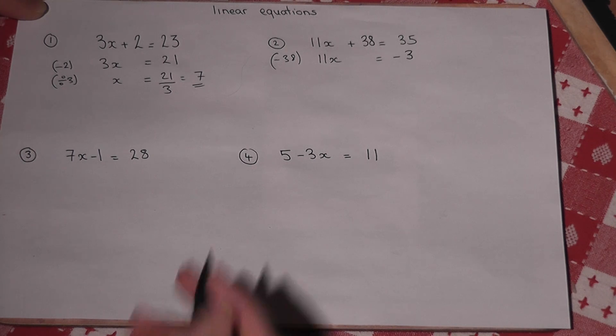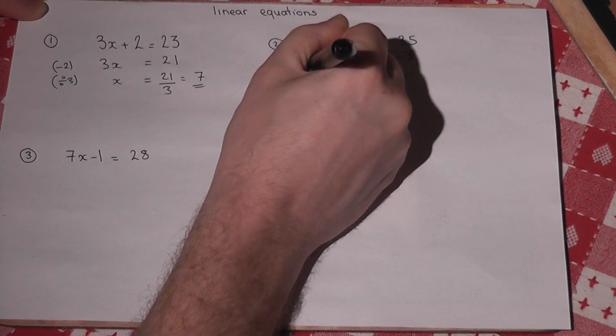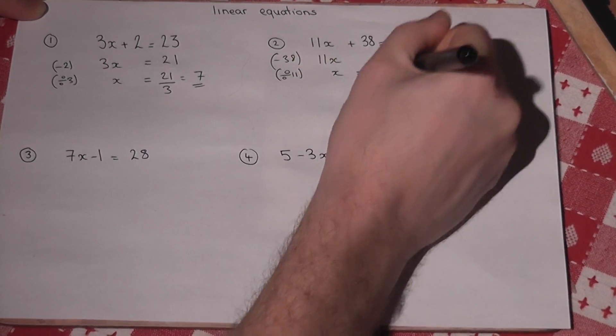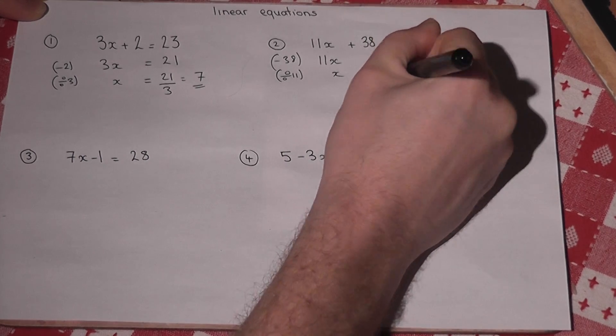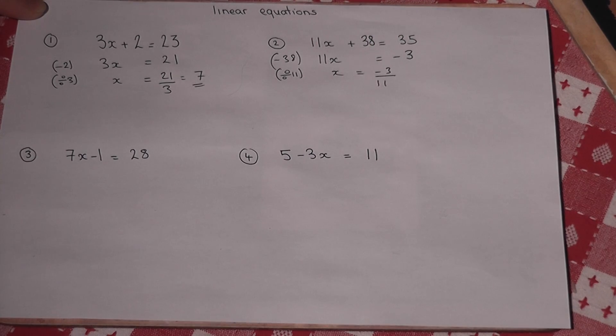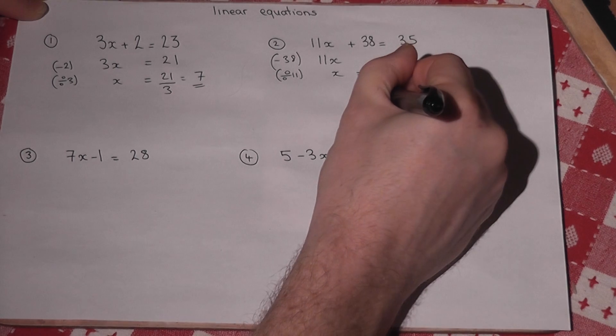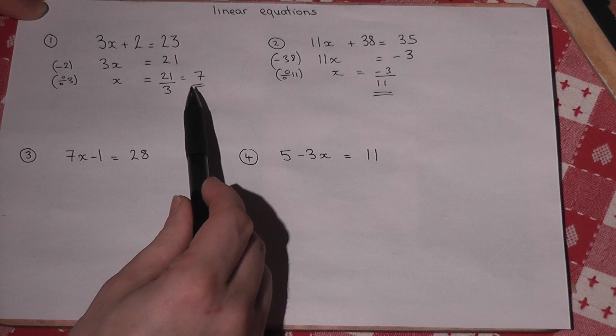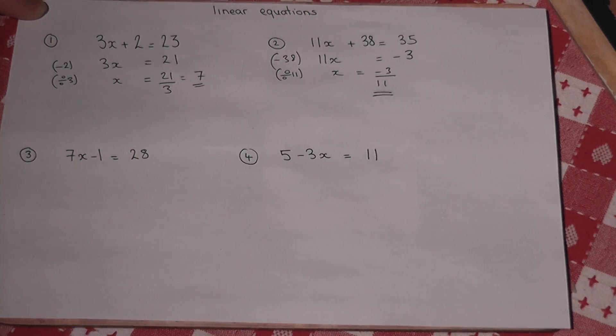And then I divide by 11 to find x. So x equals minus 3 divided by 11. It is a negative fraction. In the first example I got a whole number. In the second example I got a fraction.